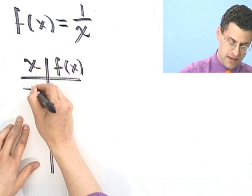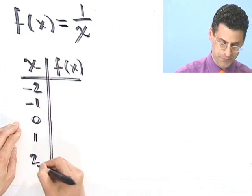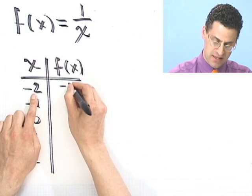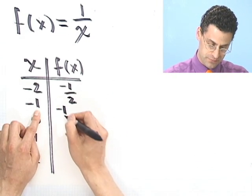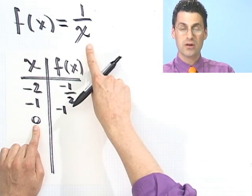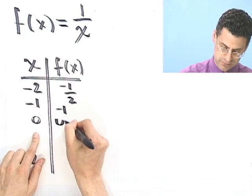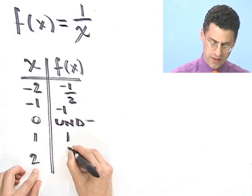So let's put in negative 2, negative 1, 0, 1, and 2. If I plug in negative 2, I just take the reciprocal, so I see negative 1 half. If I plug in negative 1, I just see negative 1. If I plug in 0, that's undefined. In fact, 0 is not a point in the domain. So this is undefined, not allowed. If I plug in 1, I get 1. If I plug in 2, I get a half.